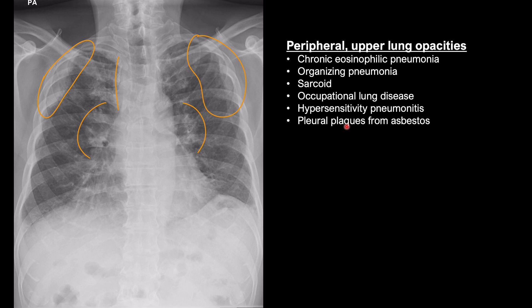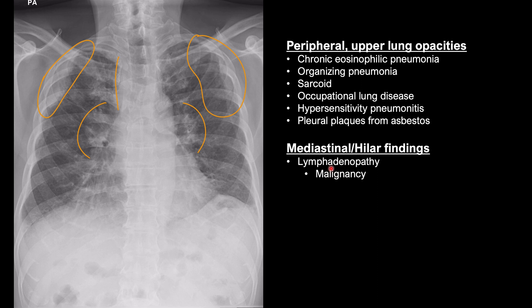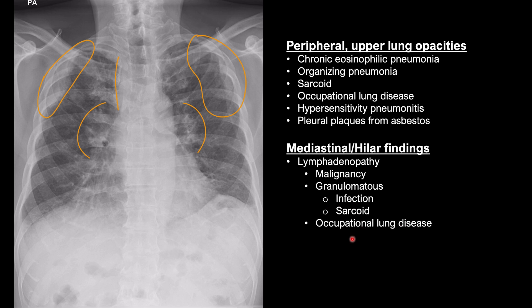For the hila, I think this is likely lymphadenopathy, either from malignancy, or it could be granulomatous from granulomatous infection or sarcoid. Occupational lung disease such as silicosis or coal workers' pneumoconiosis, and less likely vascular enlargement.